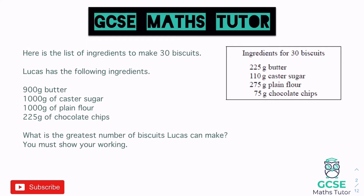In this type of question, one ingredient will be the limiting factor. For example, you might have enough butter to make 100 biscuits and enough sugar to make 100 biscuits, but if you only have enough chocolate chips for 30, then you can only make 30. The question wants the full recipe, so we need to find which ingredient limits us.